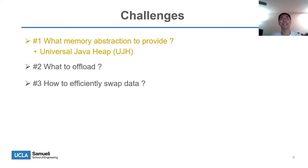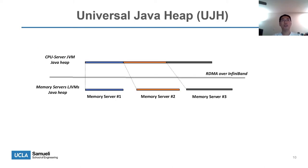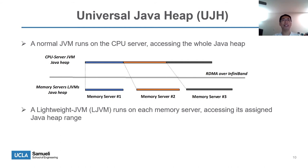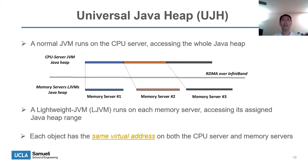We have three main challenges in designing a disaggregated runtime. The first is what memory abstraction to provide. We propose the Universal Java Heap. A normal JVM runs on the CPU server and can access the whole Java heap. A lightweight JVM is launched on each memory server and can only access the Java heap range assigned to it. The lightweight JVM is a trimmed JVM designed for memory servers with weak compute. Objects are allocated on the CPU server and keep the same virtual address when they are evicted to the memory servers, so the lightweight JVM can trace evicted objects without address translation.